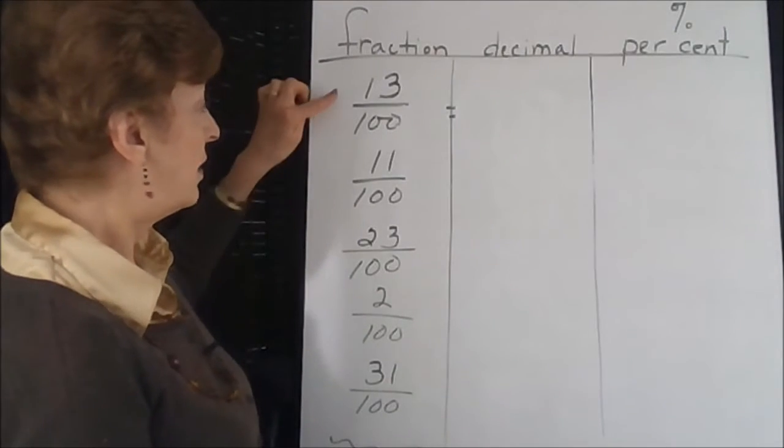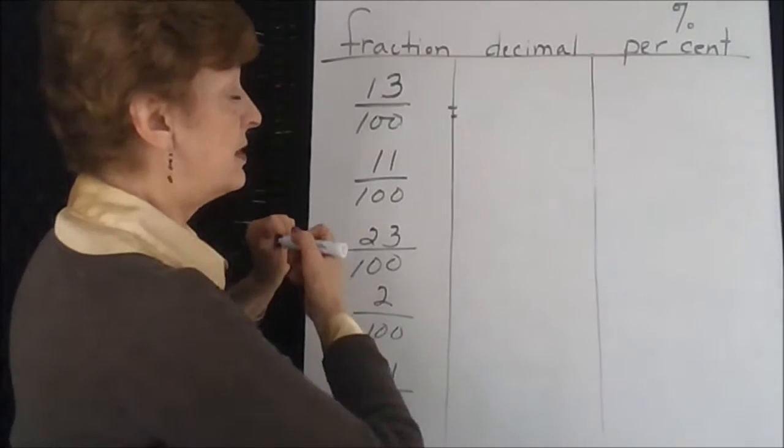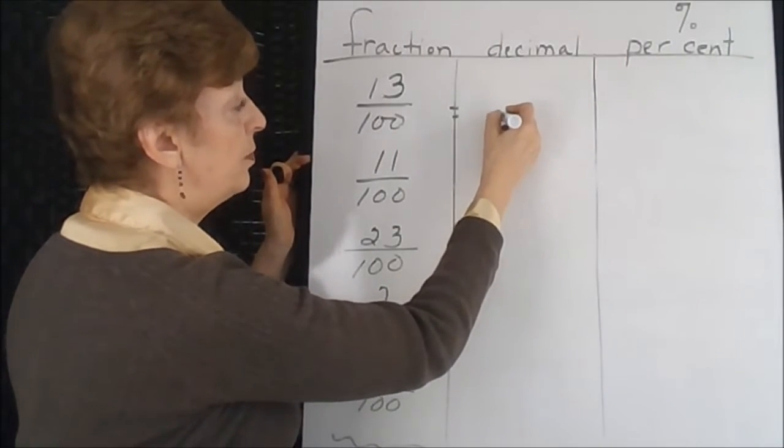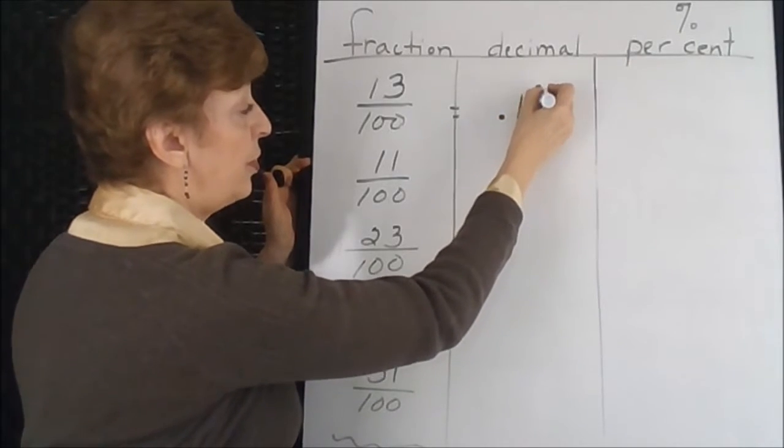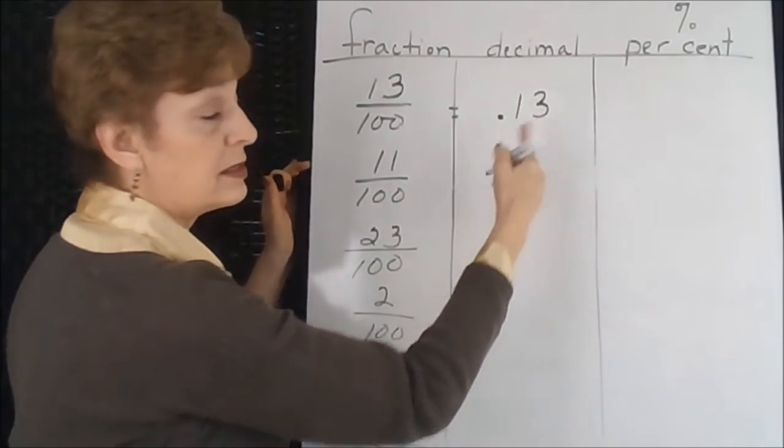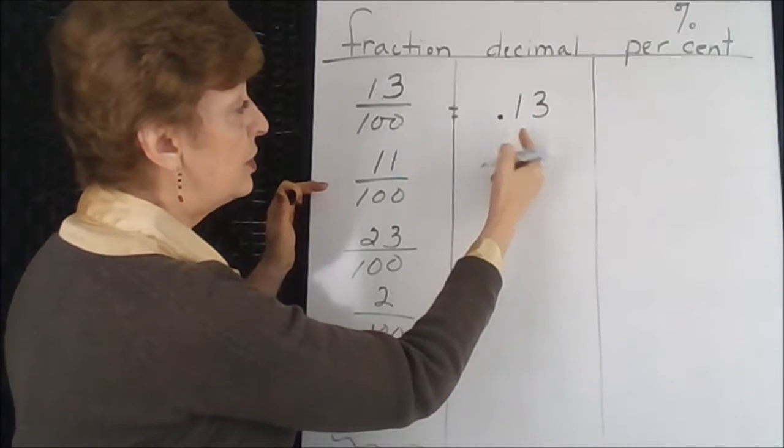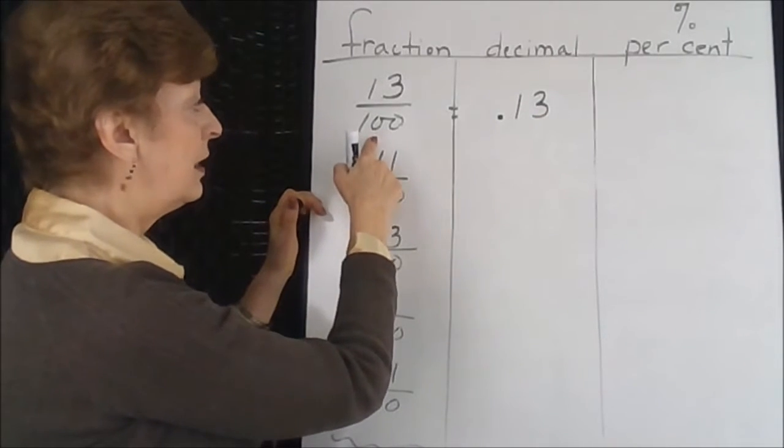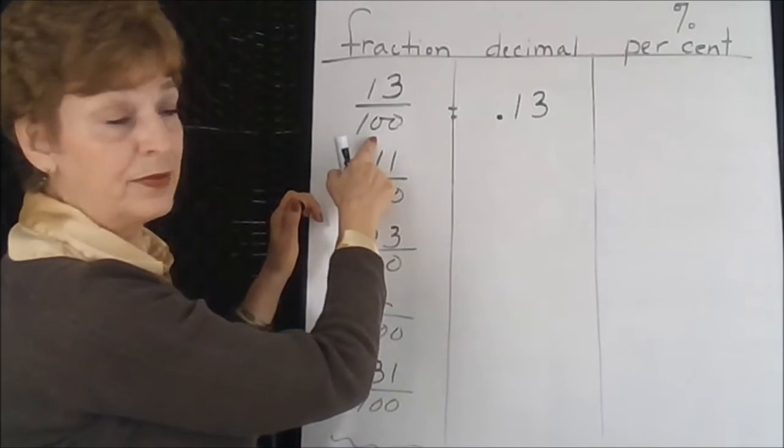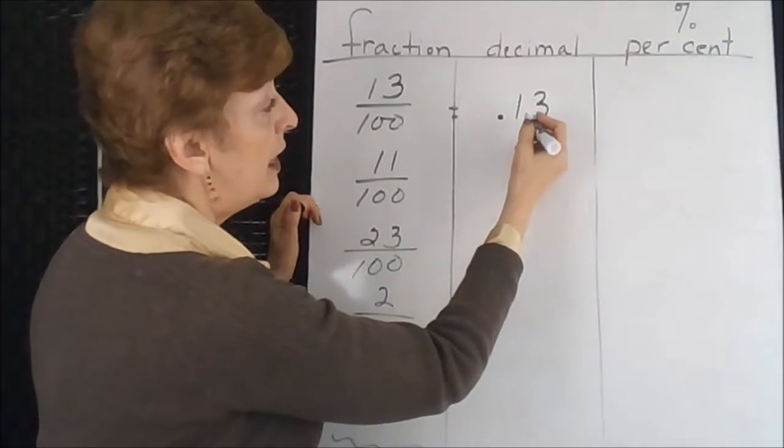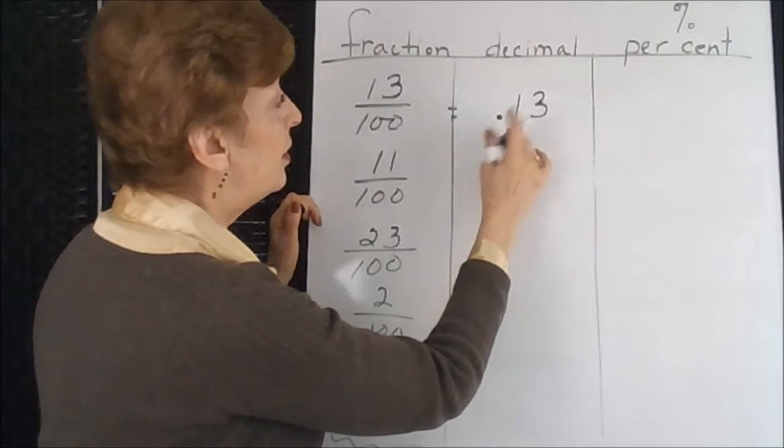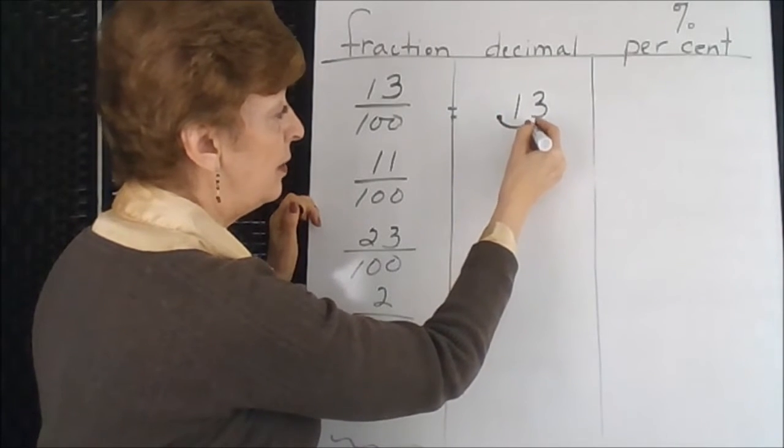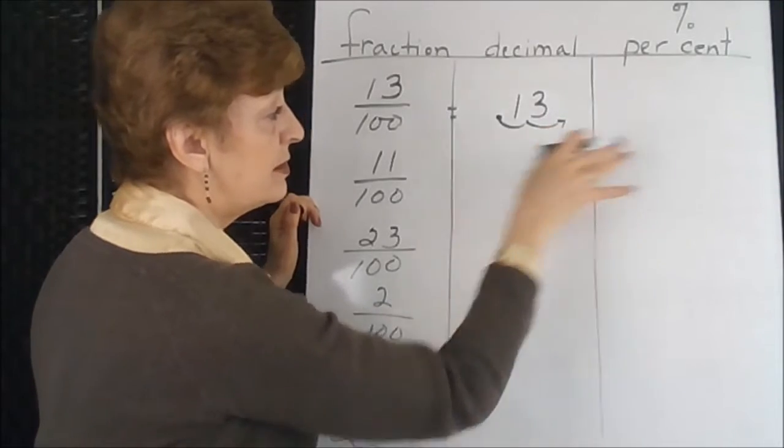So 13/100 in the decimal form, we would have to put our 13, the 3 part, the 3 because it's in columns, would have to go in the hundredths position because that is the column of the denominator.